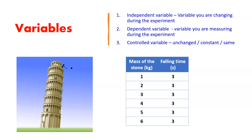Then what is the controlled variable? Controlled variable means the variable that is unchanged — constant and the same throughout the experiment. For example, in this experiment, each time you drop the stone from the same height, so height or the distance traveled is unchanged, constant throughout the experiment. Therefore, height is the controlled variable in this experiment.